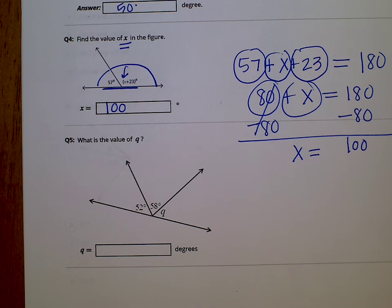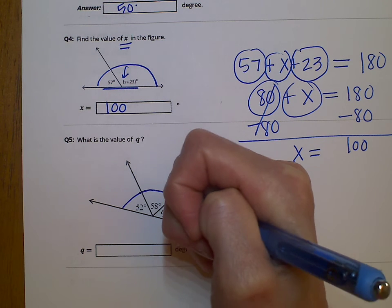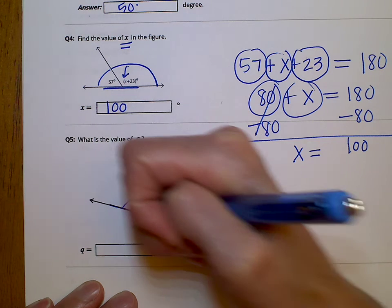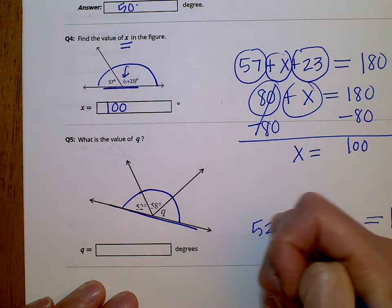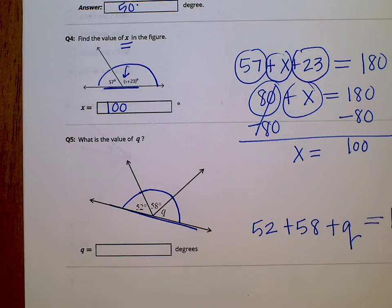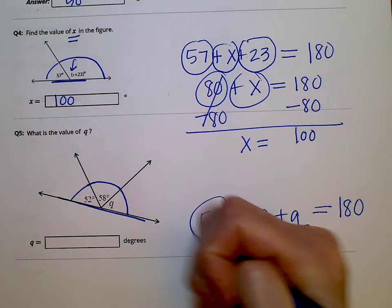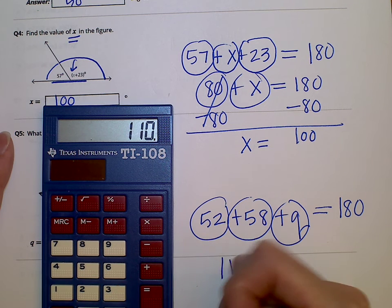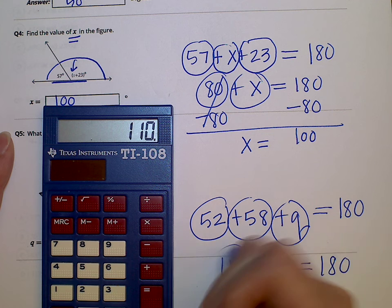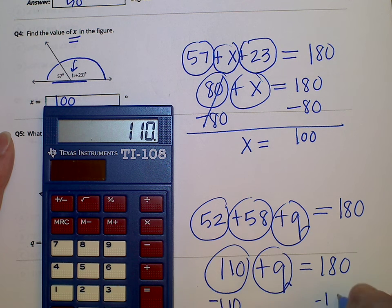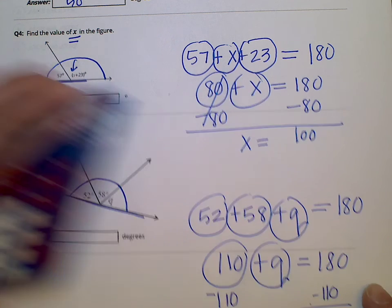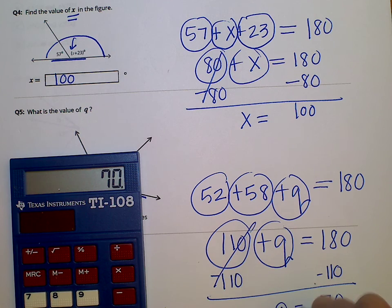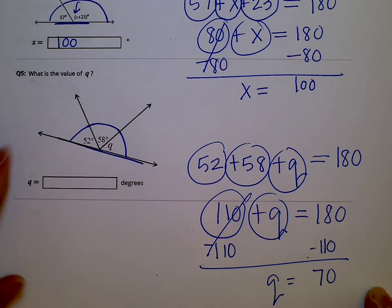Number 5: what is the value of Q? We have three angles — a 52 degree angle, a 58 degree angle, and a Q angle. All three of these angles are sitting on this straight line, so they'll equal 180 degrees. So we add 52 plus 58 plus Q and combine like terms. 52 plus 58 gives you 110, plus Q equals 180. Subtract 110 from both sides: 180 minus 110 gives us 70. So Q is going to equal 70 degrees.